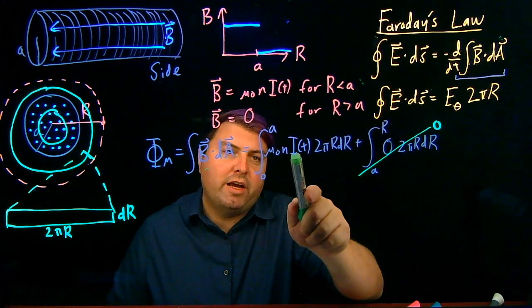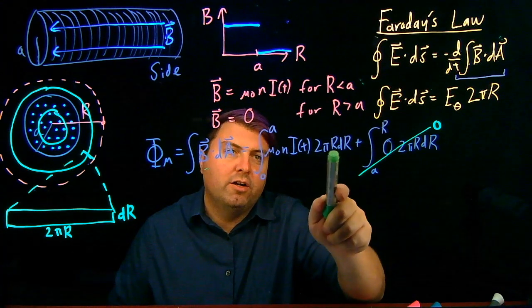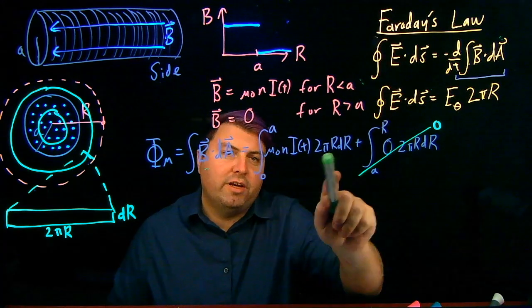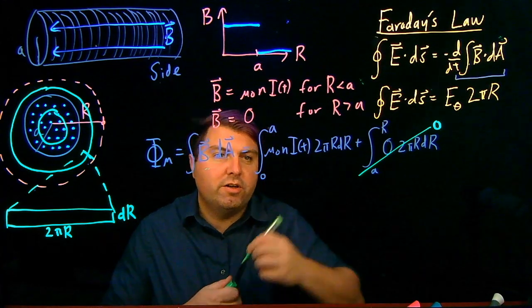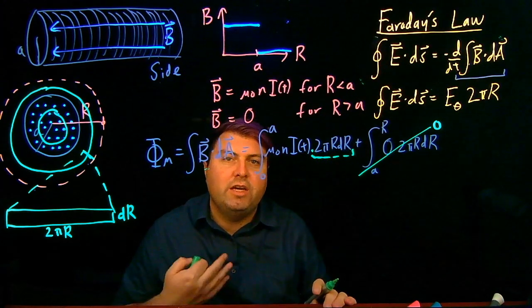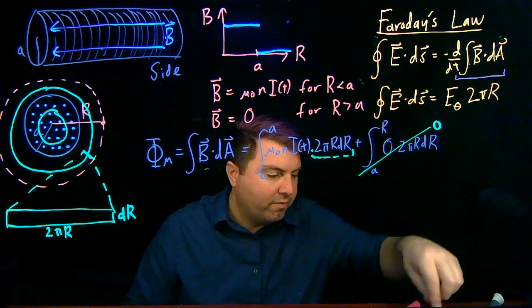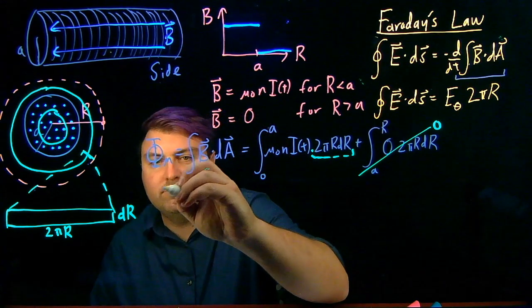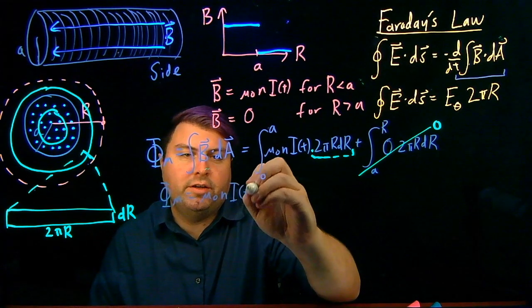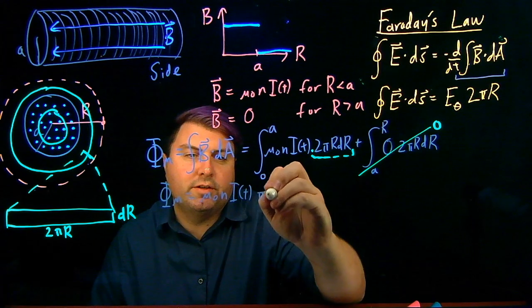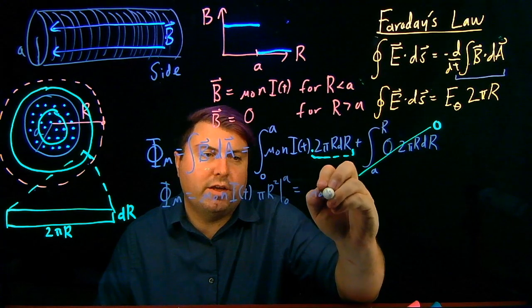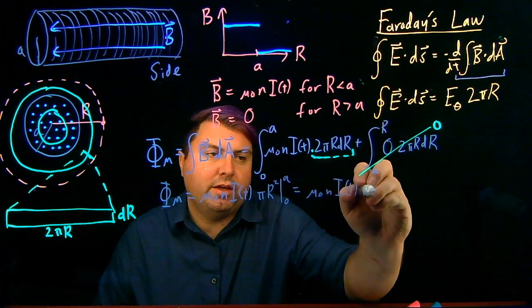An indefinite integral of 0 is 0, so that's always nice. This integral of μ₀ni(t), 2πr dR, only r depends upon the dR, everything else is constant in r, but also we can just notice that the integral of dA is going to be A, it's just going to be the area of the circle. So, our flux magnetic is going to be μ₀ni(t) times πr² from 0 to A, or we say μ₀ni(t)πA².